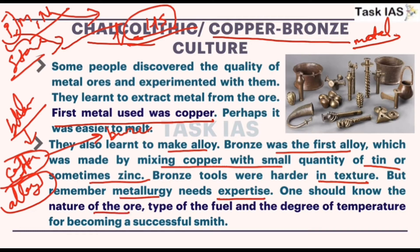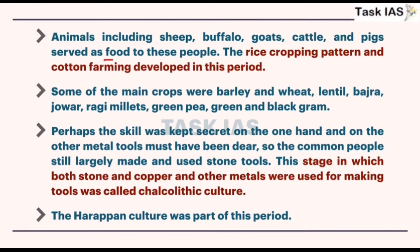Bronze tools were harder in texture. But remember, metallurgy needs expertise — one should know the nature of the ore, type of fuel, and degree of temperature to become a successful smith. These were gradual changes. Animals including sheep, buffalo, goats, cattle, and pigs served as food, showing that the Mesolithic and Neolithic characteristic of animal domestication continues.